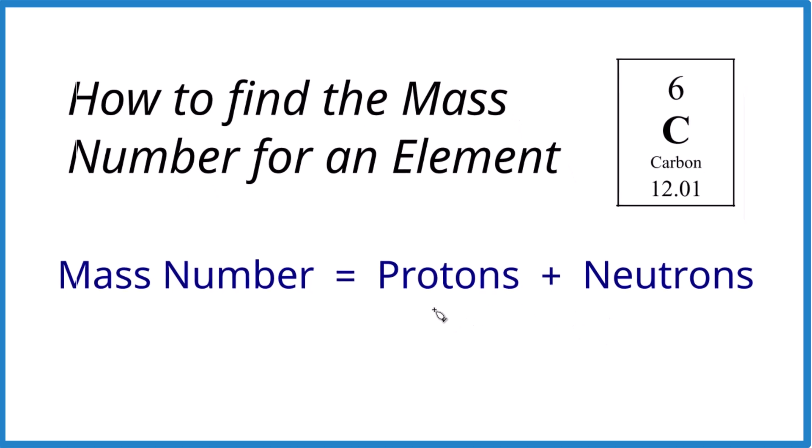So let's say you had 6 protons plus 6 neutrons. What's the mass number? 6 plus 6, that equals 12. Pretty easy, right?